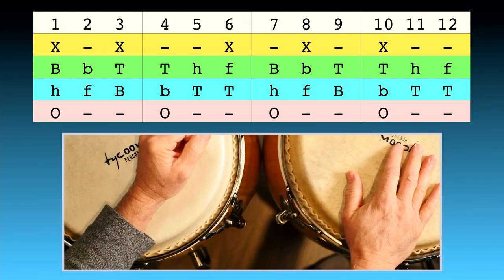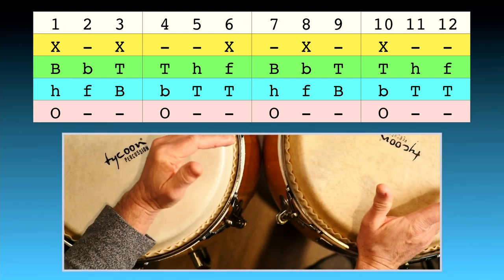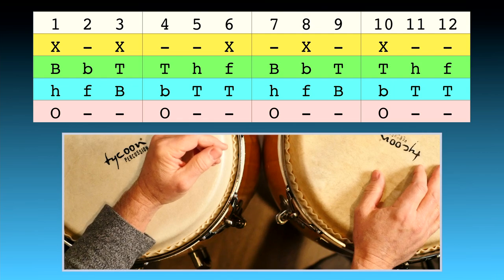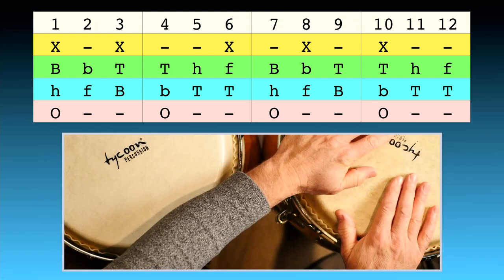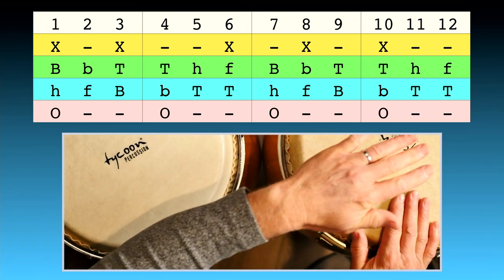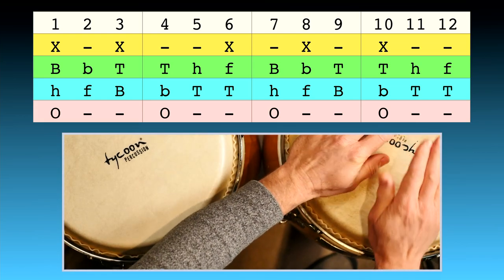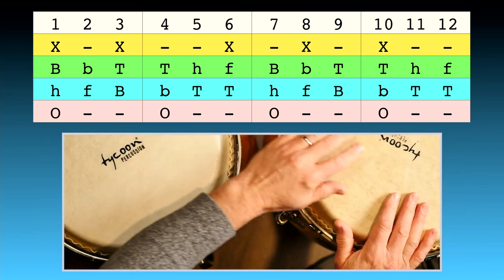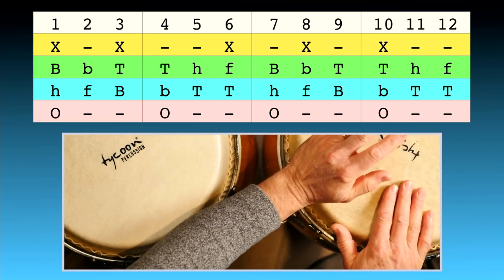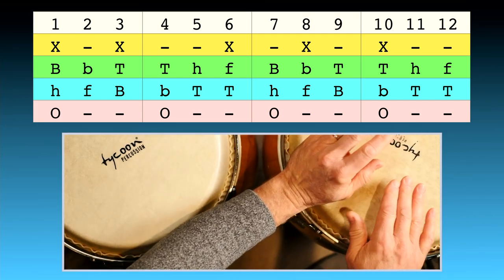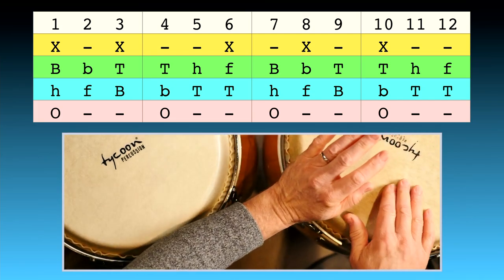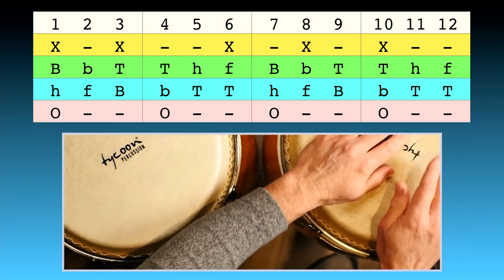Let's look at the low drum part. For those of you who are astute observers, you'll notice it's the same pattern — it's just shifted over, shifted later by a couple of eighth notes. So you've already been playing it; we just start with the hand-fingers in the left. Hand-fingers bass bass tone tone — same pattern, just starting at a different time. Hand-fingers bass bass tone tone — 1 2 3 4 5 6, 1 2 3 4 5 6.